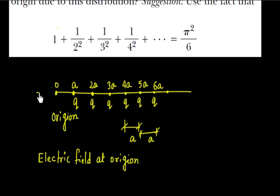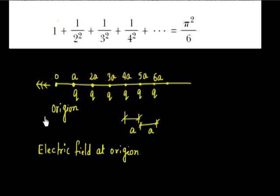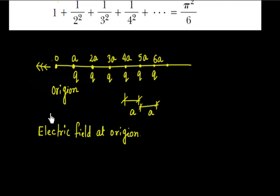The electric field at this point due to each point charge is directed in the negative x direction. Due to the first, second, and third point charge, all fields are directed the same way. So I can apply the superposition principle and simply add all electric fields. Let us first find out the electric field due to the charge at x equals to a, finding the electric field at x equals to 0.